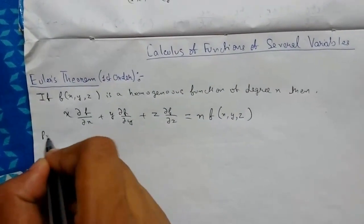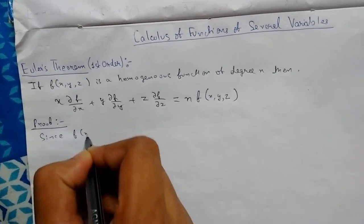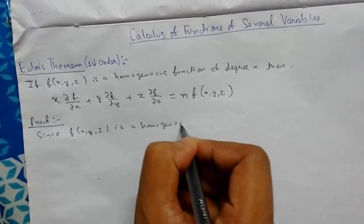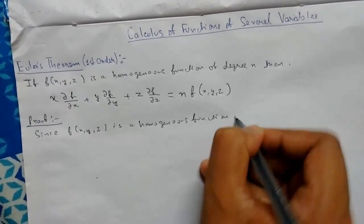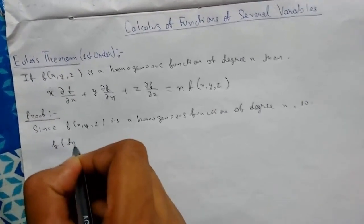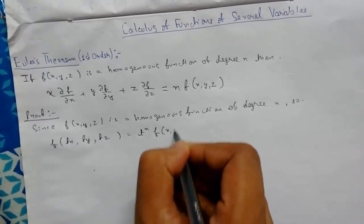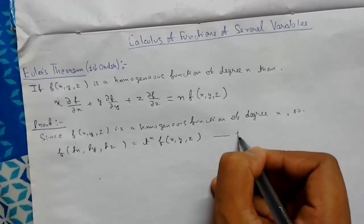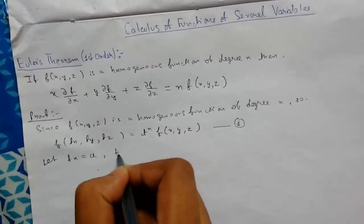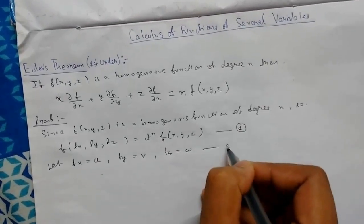So let us see the proof for this. Since f(x, y, z) is a homogeneous function of degree n, f of tx, ty, and tz will be equal to t to the power n times f of x, y, and z. Let us consider this equation one. Now let tx equals u, ty equals v, and tz equals w. So this is equation two.